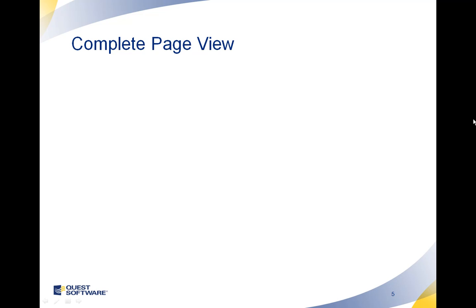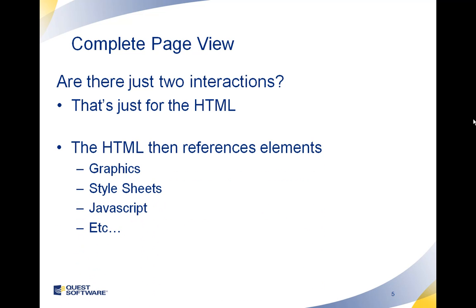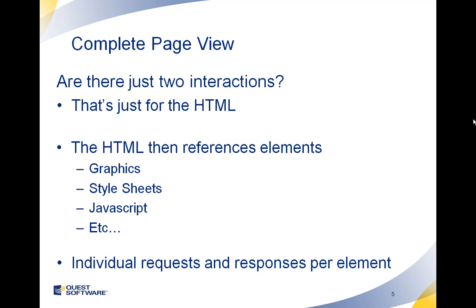Now for the complete page view — to see the whole page with all of the content — are there just two interactions? No, that's just for the HTML, just for the page itself. What we really have is the HTML references, in order to create the whole page and the whole visualization, it references graphics, style sheets, JavaScripts, and a bunch of other pieces. These individual requests and responses each have an individual one for every element. It's not uncommon for a home page to have up to 30 different elements, so you'll see 30 different request-response pairs going back and forth between the end user's browser and the web server.